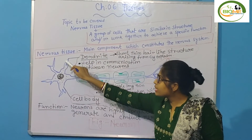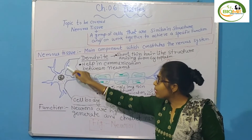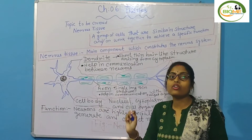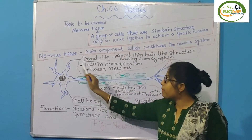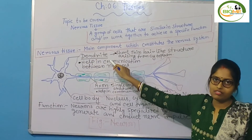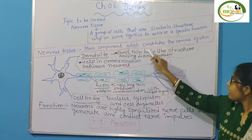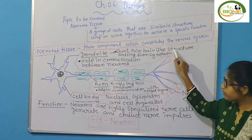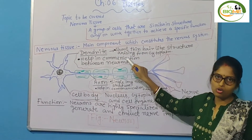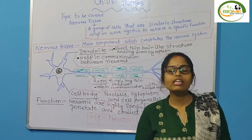From the cell body some outgrowths are there. These outgrowths are known as dendrons, and the branches of the dendrons are known as dendrites. Dendrites are short, thin, hair-like structures that help in communication between neurons. So neurons can communicate with the help of dendrites.